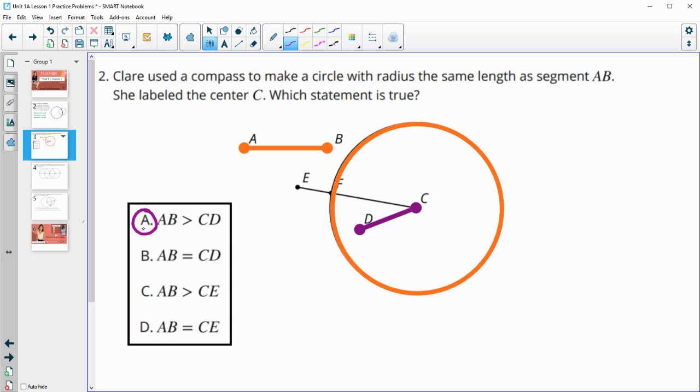Anytime the true statement comes first, I like to look at the others just to make sure I didn't make a mistake. The next one says that AB and CD are the same size, which they're not since CD is not a radius. So that's definitely false.